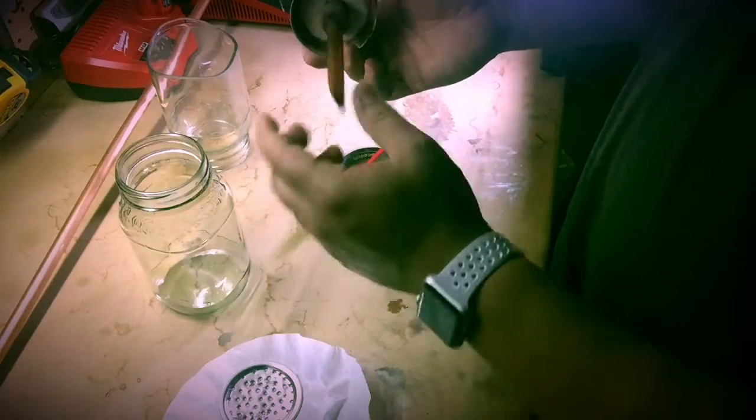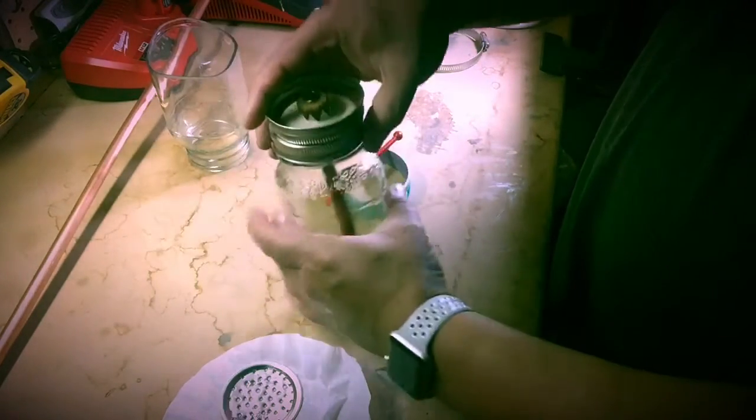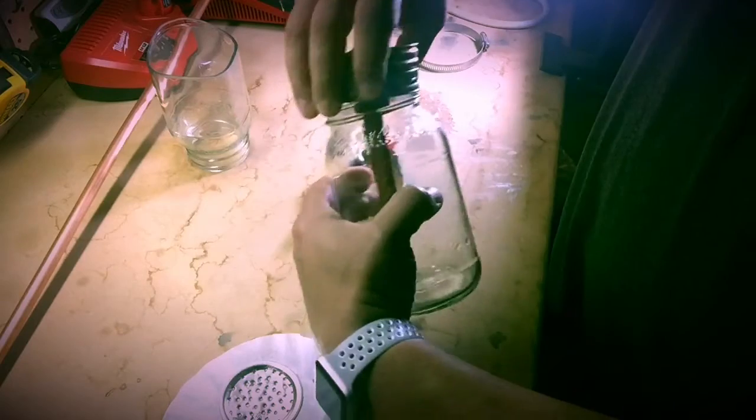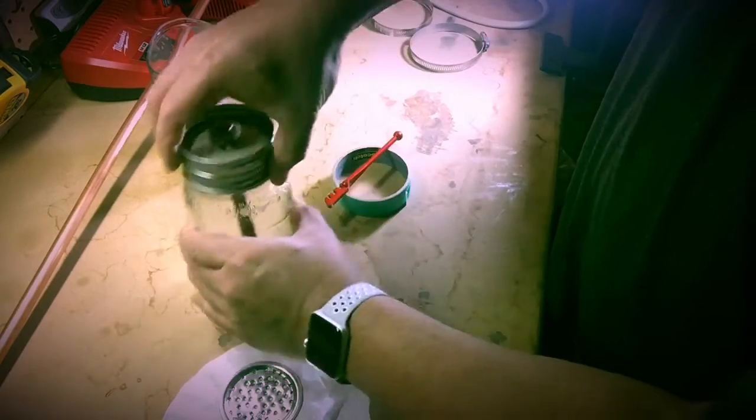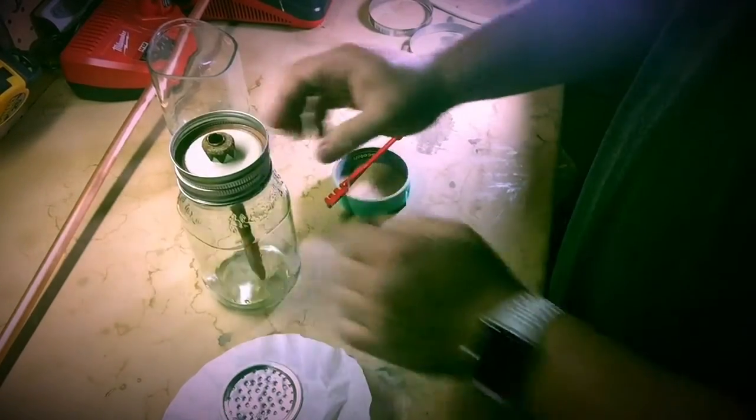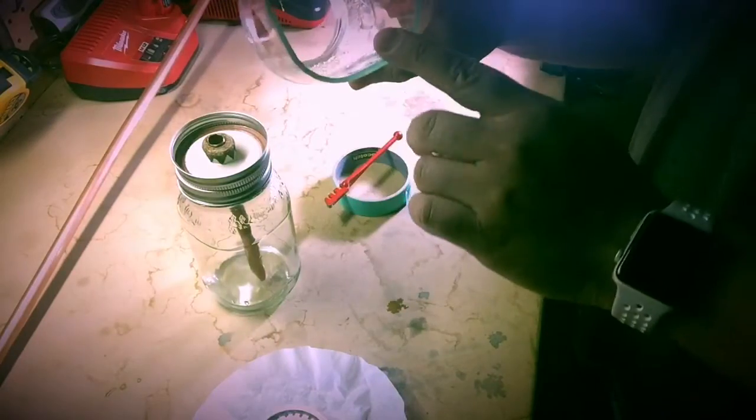So how this is put together, basically, is I have the main jar. This is where you place water into here. Usually you fill it up to about such. And then I have this jar, and this is where the coffee grinds are going to be in.